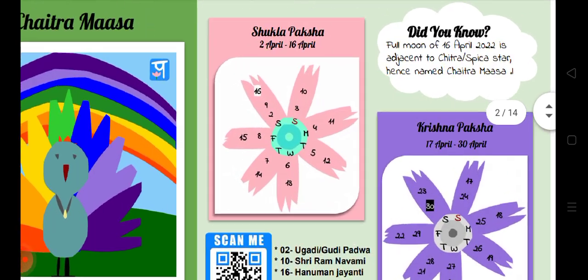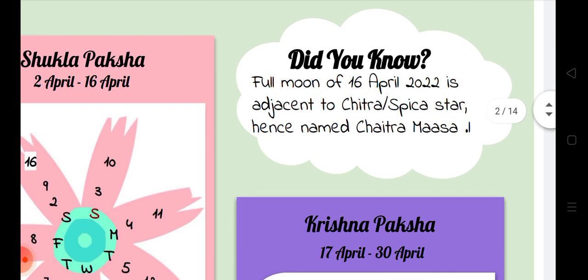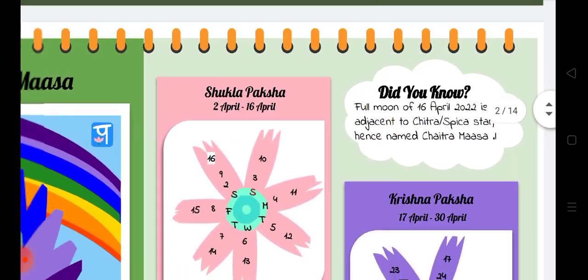We also have a 'Did You Know' section, and its purpose is to make sure that children understand the importance of the Hindu calendar and how scientific it is. For example, there is a star in the sky called Spica or Chitra, and when the full moon on 16th April is near that star, that specific month is named after it — so the Chitra star month is called Chaitra Masa. This section shows kids how scientific our Hindu calendar really is.